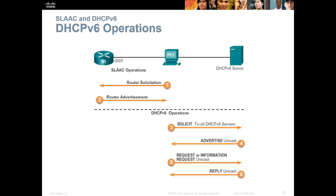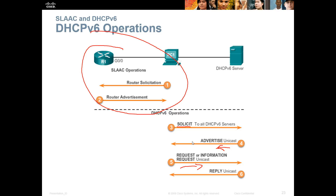For DHCPv6 steps: once PC1 is told to use the DHCPv6 server, it sends a Solicit to all DHCPv6 servers. The DHCPv6 server returns an Advertise as a unicast. The PC then sends a Request or Information-Request as a unicast back to that specific DHCPv6 server. The DHCPv6 server sends a Reply as a unicast. Pretty similar steps to IPv4, but with different message titles.